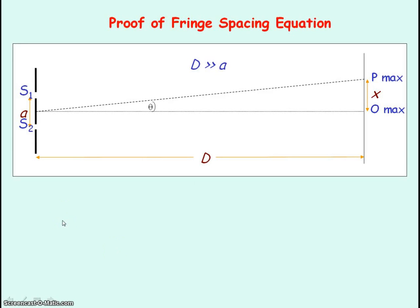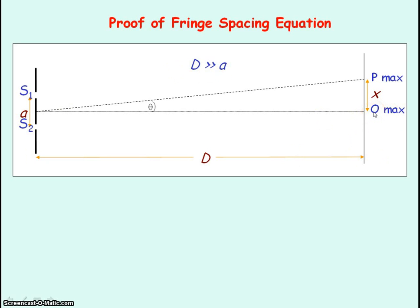Now for the proof of the fringe spacing equation — this is not required for the exam, but is for those interested in where the equation comes from. You have two coherent sources S1 and S2 separated by distance A, and a screen at distance D beyond, where D is much, much greater than A. At point zero, a maximum occurs because it is equidistant from S1 and S2, so the path difference is zero, the waves meet in phase, and constructive interference occurs.